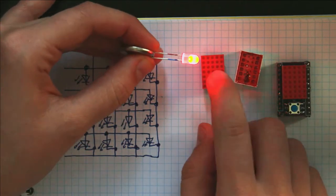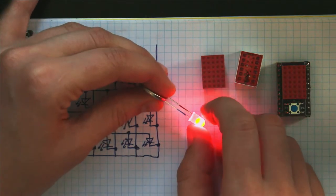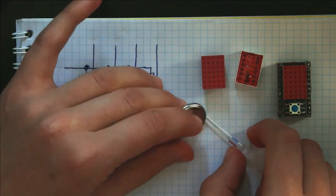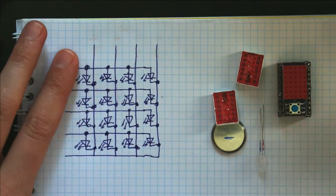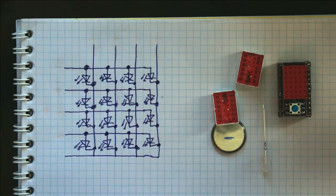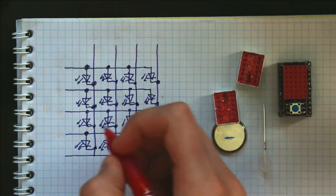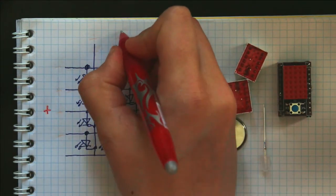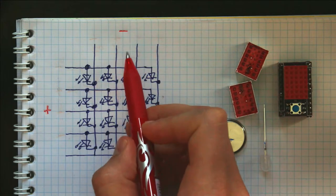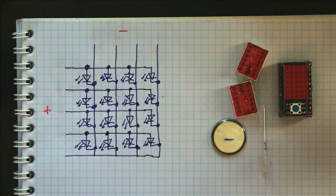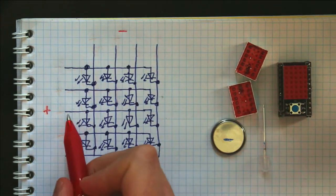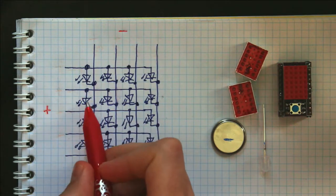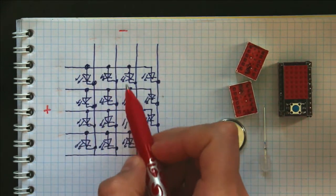And this is really important when we're trying to control which LEDs turn on. So basically, in this matrix, if we wanted all of the LEDs to turn on, we would set this side to positive and all of the pins on this side to negative. And that would allow current to flow through all of the LEDs to the corresponding pins.